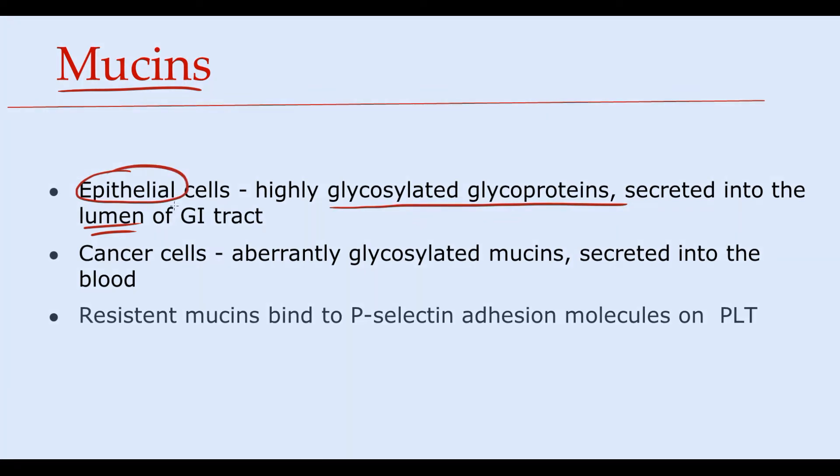For example, gastric epithelial cells secrete them into the gastric lumen. But cancer cells produce aberrantly glycosylated mucins, and they secrete them not into the lumen, but into the blood.